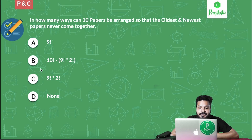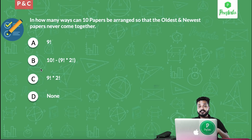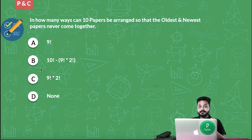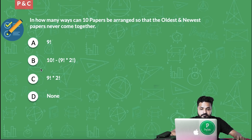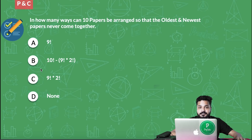In how many ways can 10 papers be arranged so that the oldest and the newest papers never come together? The first case was when two things always come together; this is the case when things never come together. This is the second type of question in PNC for placements. Take your time — I'm giving you one minute for this particular question. Your timer starts now.